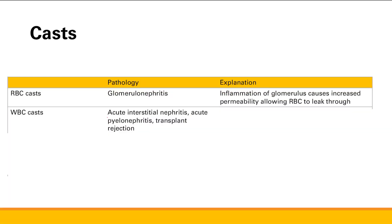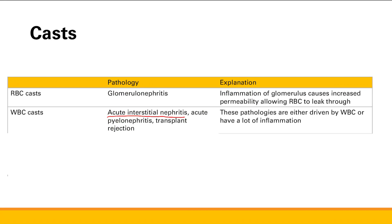Next is white blood cell casts. These are seen in acute interstitial nephritis, acute pyelonephritis, and transplant rejection. Why would you see white blood cell casts in these problems? It's because these pathologies are driven either by white blood cells or they have a lot of inflammation. So if you have inflammation, white blood cells come in, and you're going to see these white blood cell casts.